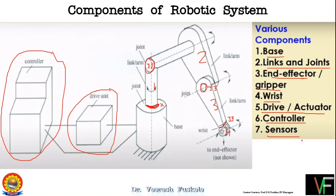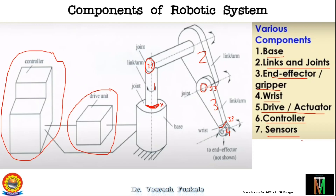To make robots intelligent, we use sensors. Sensors are required to collect information from the environment so that the control unit can be driven and the robot made intelligent. Think of sensors as a feedback system — the control unit processes the information gathered by sensors, takes decisions, passes them to the drive unit, which then drives the links and joints to do the desired job.